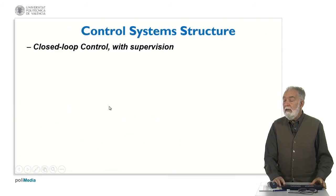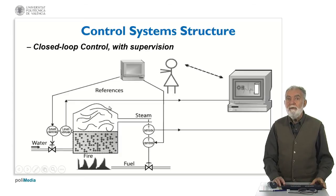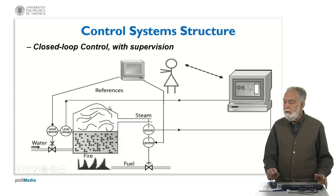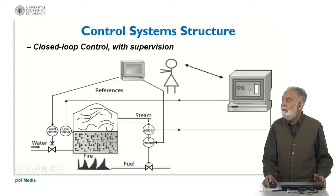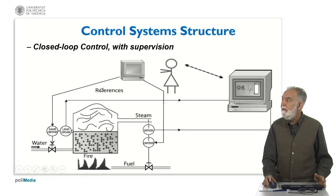We may have the operator in a supervisory scheme. In that case, the control is done in closed loop. There is a sensor for the steam, a sensor for the level, and there is a level controller. The control of the water level, for instance, is done in closed loop, and the operator is fixing the references — so it is supervising the closed loop control.